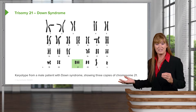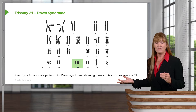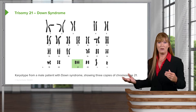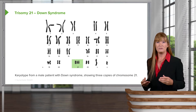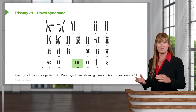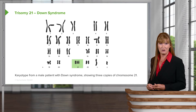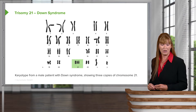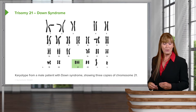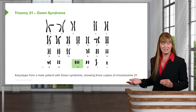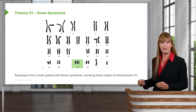We're going to spend a lot of time looking at Down syndrome and also at some visualization techniques we use in genetics to test for it. Here we are with Down syndrome — trisomy 21.